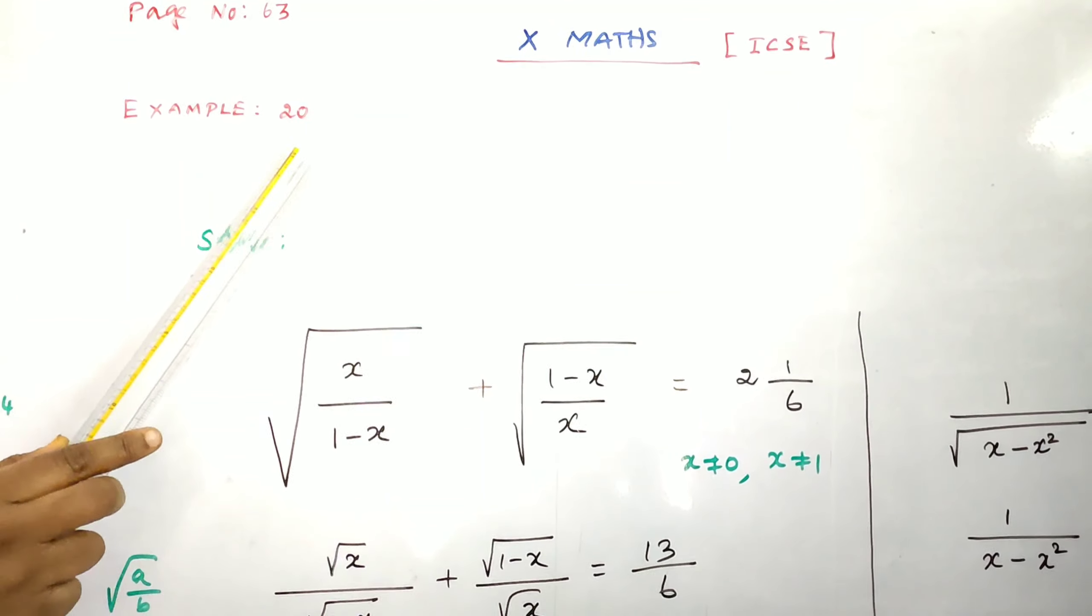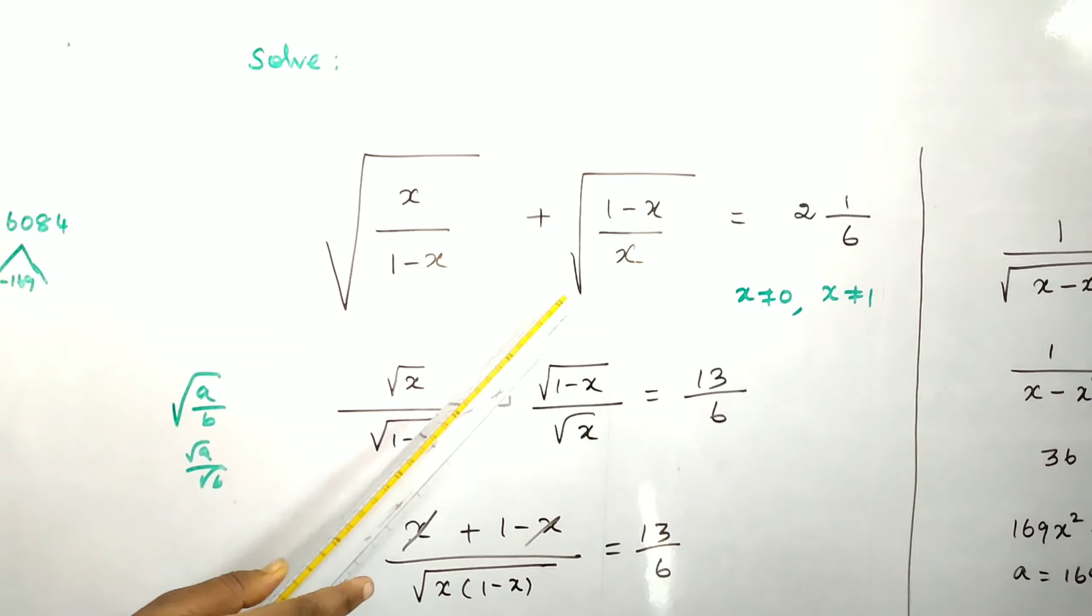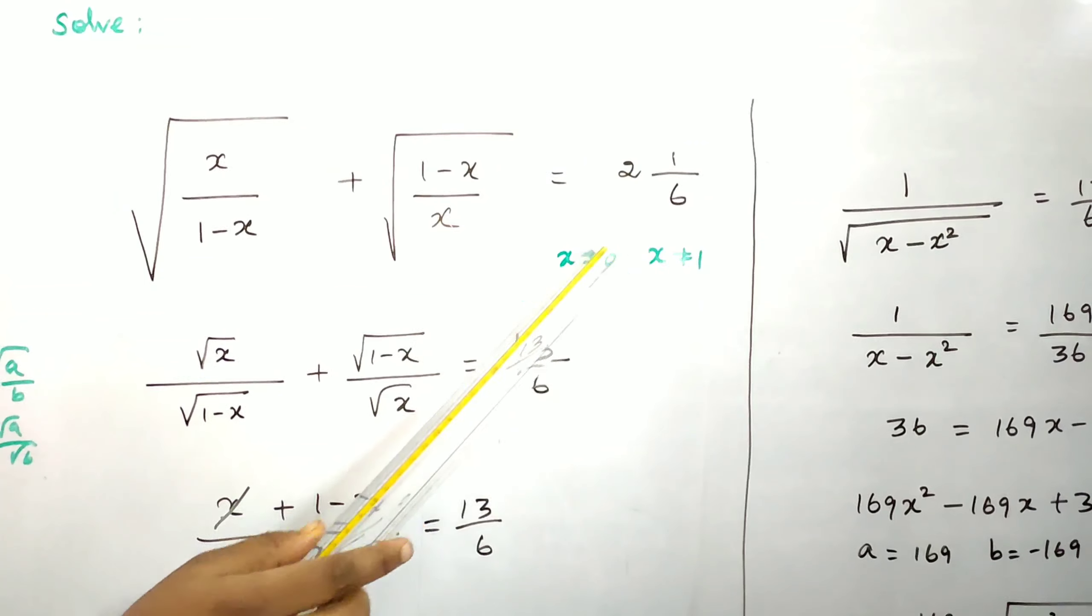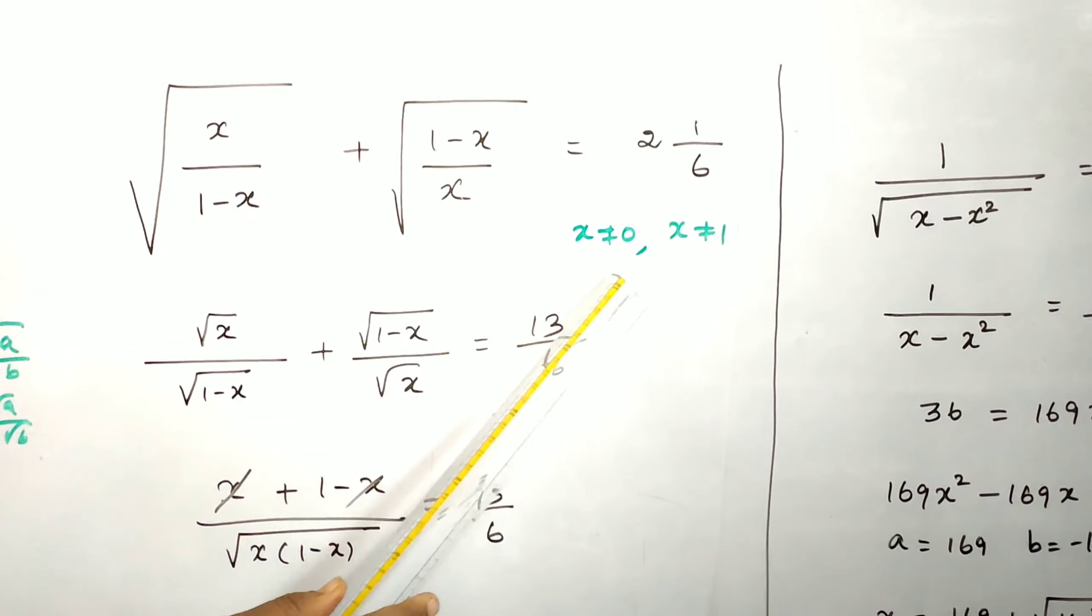Page number 63, example 20. Solve square root of x over 1 minus x plus square root of 1 minus x over x equals 2 and 1/6, where x not equal to 0 and x not equal to 1.